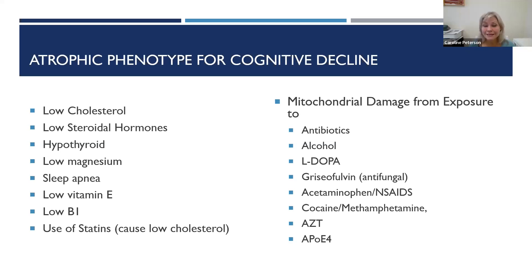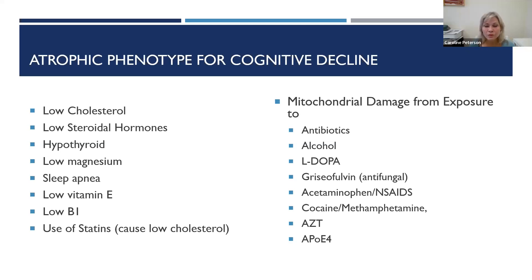You could have low thyroid function, low magnesium, sleep apnea again. The fat-soluble vitamins, B1, and then mitochondrial damage — all these things make it hard to have the nourishment, the energy that we need to have a healthy brain.